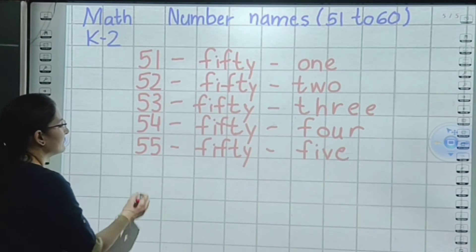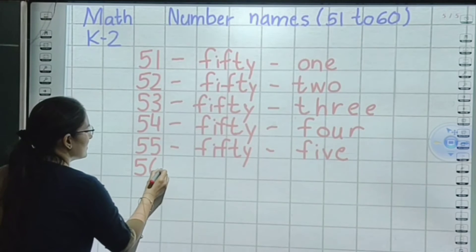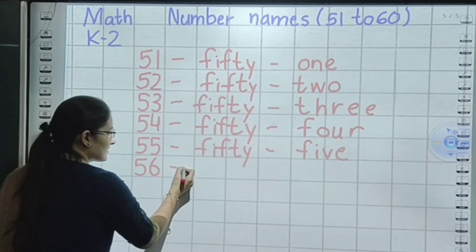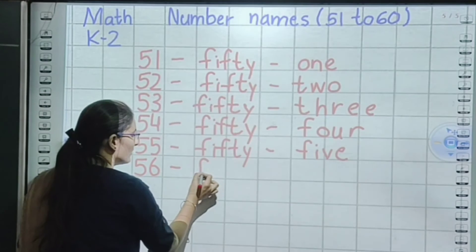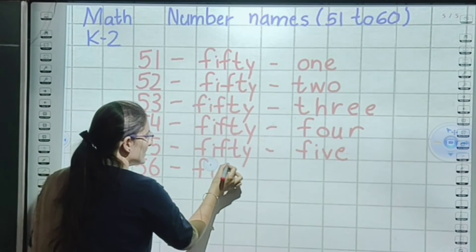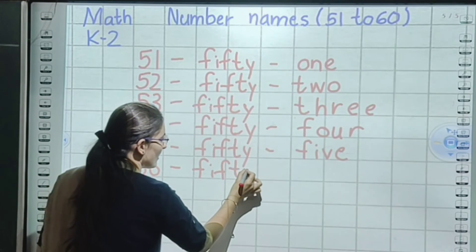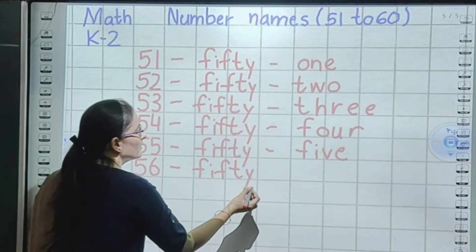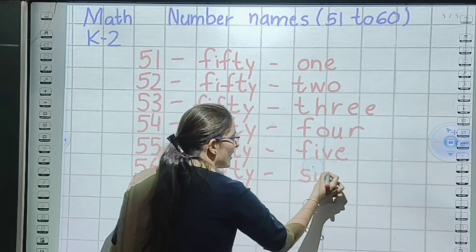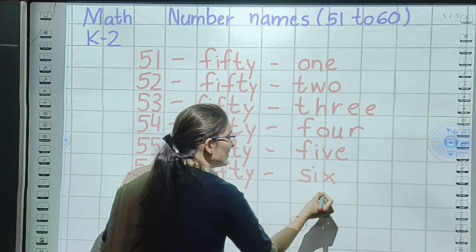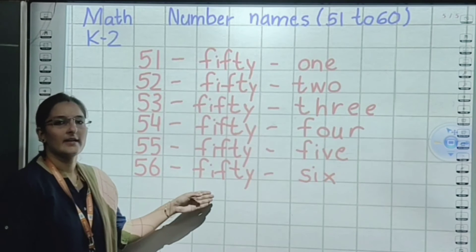55. Small sleeping line. Spelling of 50: F, I, F, T, Y — fifty. Small sleeping line. Now spelling of 5: F, I, V, E — five. So 55 is fifty-five.